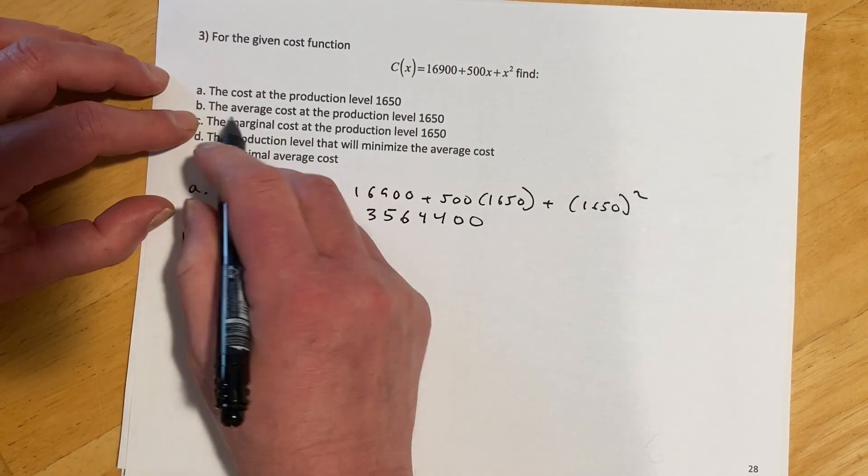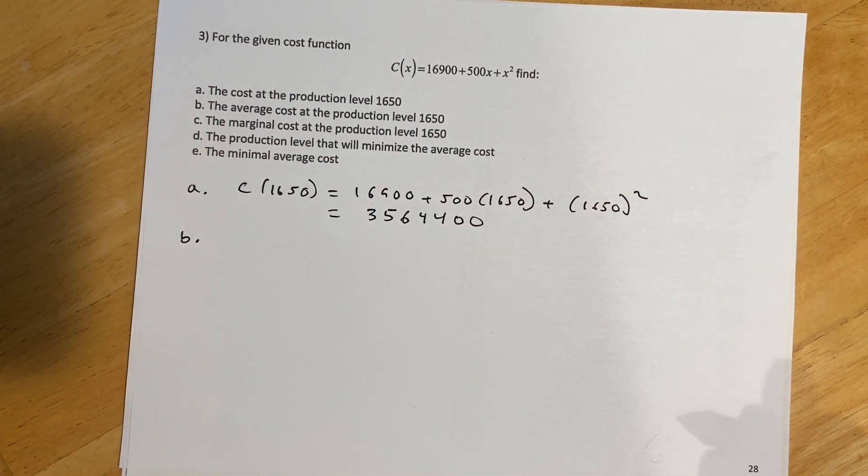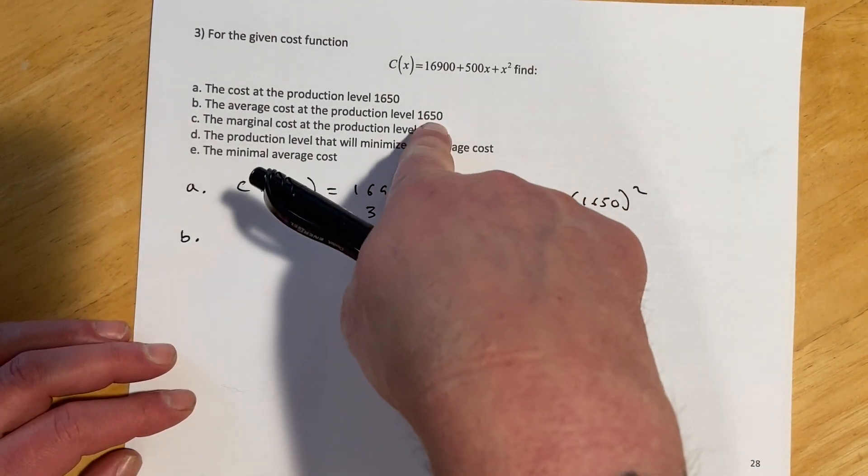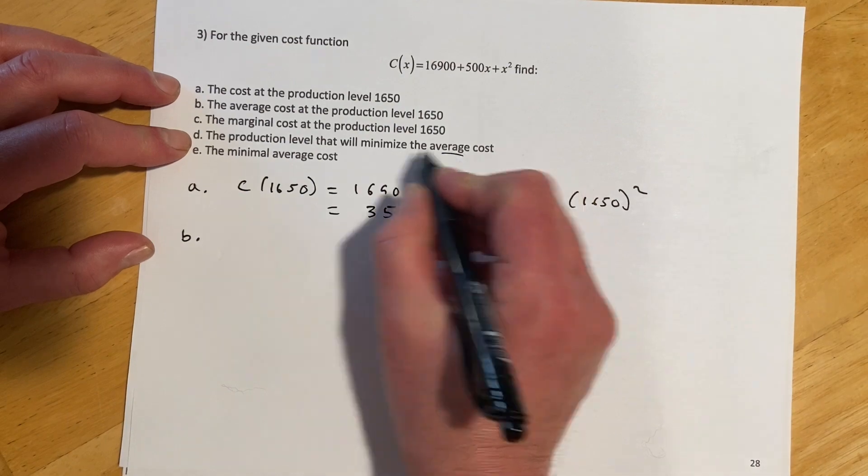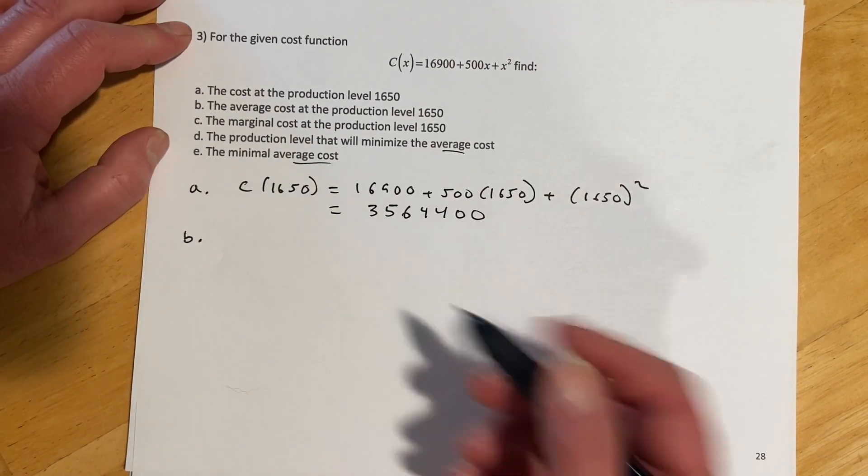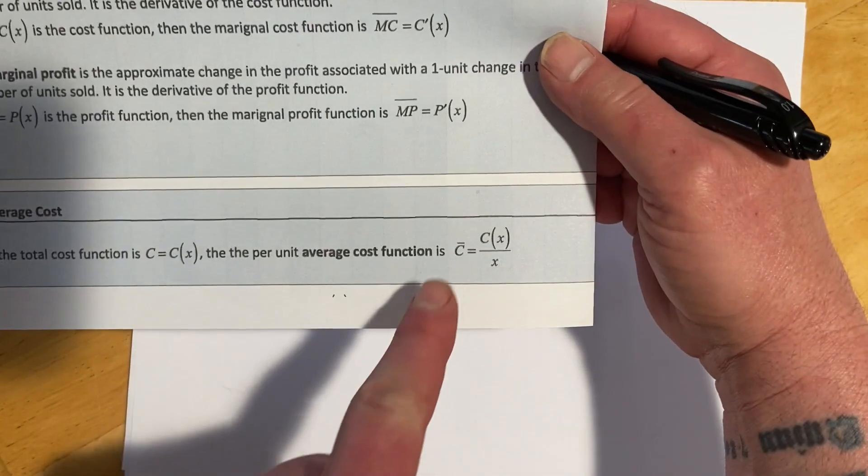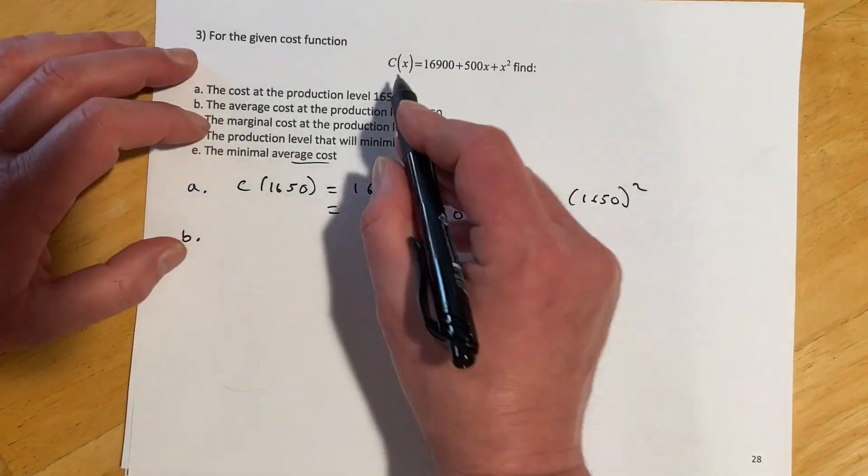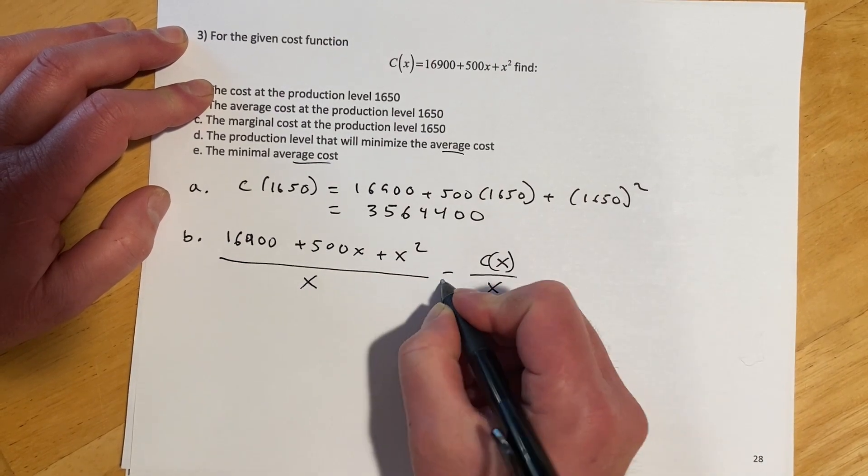For B, find the average cost at the production level is 1,650. So there are a couple of ways I could do this. I could just take this number and divide it by that, and that would be my average cost because I spent that much. I made that many. There it is. I'm going to go ahead and make an average cost function because we're going to need it for parts D and E. So even though there's an easier way to do B, that's fine. You're still going to have to do it down here. So let me make my function. This is my cost function. And remember from back here, C bar is going to be C of X divided by X, so our total cost divided by our total units. So I could just take this. So that is C of X, and then I'm going to divide it by X, and that will equal our average cost.